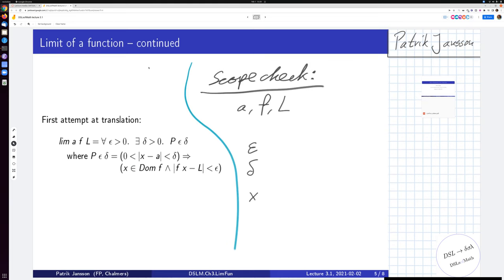So I'm trying to define a notation here. I call it Lim a f L, and I'm typing that as a predicate. Remember when I talked about predicates last week—it's something which is either true or false in the end. So we don't a priori know if it's true or false, but if we give it a particular a, that's the point where you're approaching, a particular function f, and a particular candidate limit L.